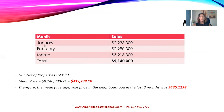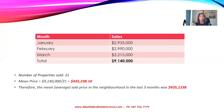Adding all the home prices for the three months, we get $9,140,000. The number of properties that sold over that time period was 21. So we take $9,140,000 and divide it by 21 — the number of properties that sold — and the price we get is $435,238. This is the mean price or the average sale price in that neighborhood.